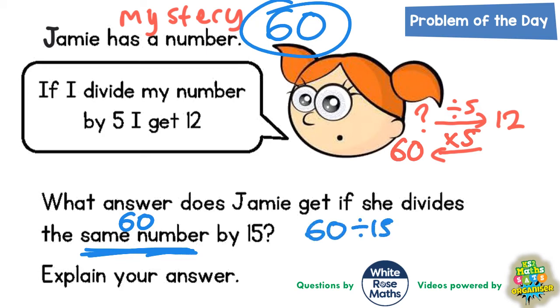That's an easy one to work out if you just count up in 15s. One 15 is 15, another 15 is 30, a third 15 is 45, and a fourth 15 takes you to 60.